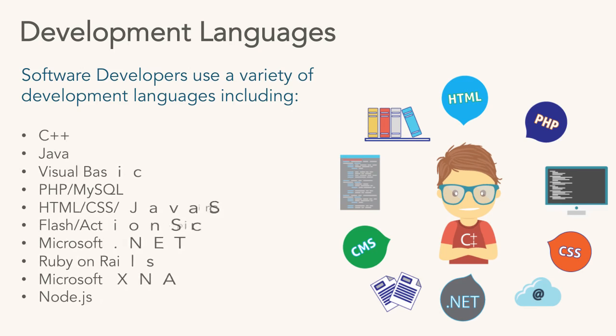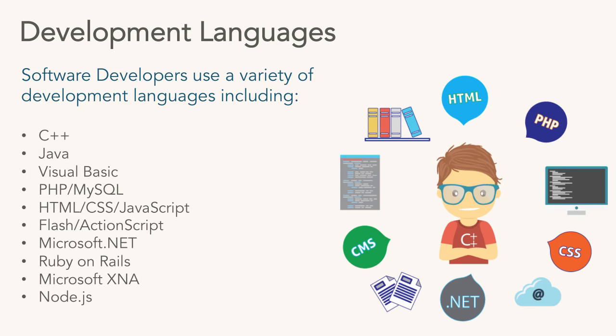There are lots of development languages: C++ which is a Microsoft thing, Java, Visual Basic (another Microsoft product), PHP and MySQL which are open-source platforms used heavily for websites, HTML and CSS, JavaScript — all really website-oriented. Flash and ActionScript are owned by Adobe and used heavily for interactive media. Microsoft .NET is used for creating Microsoft solutions.